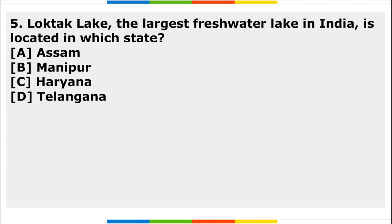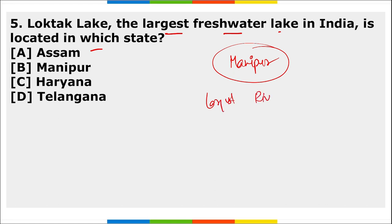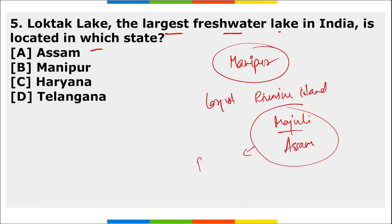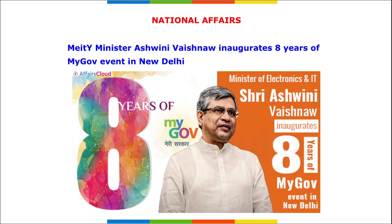Next question: Loktak Lake, the largest freshwater lake in India, is located in which state? Loktak Lake is situated in Manipur. If asked where the largest river island is — Majuli Island — it is located in the Brahmaputra river. Also remember: Chilika Lake is in Odisha.